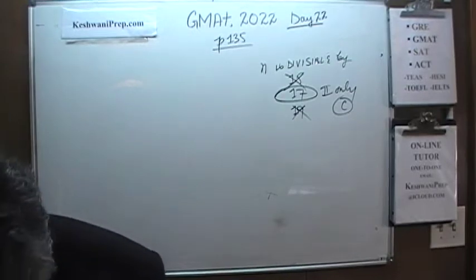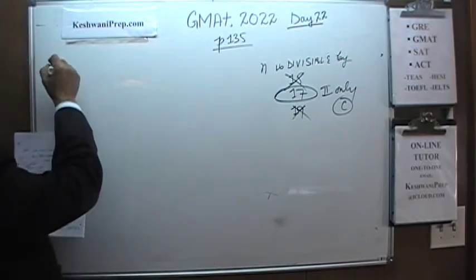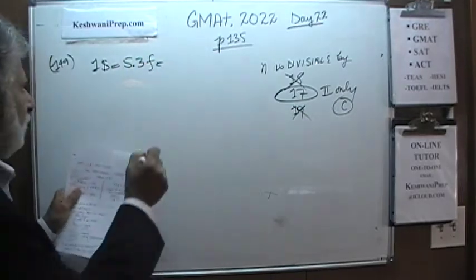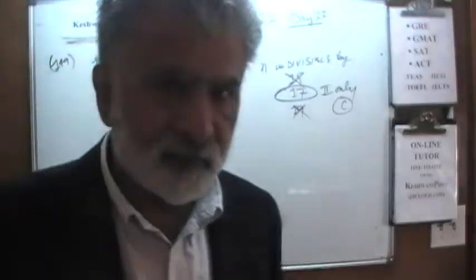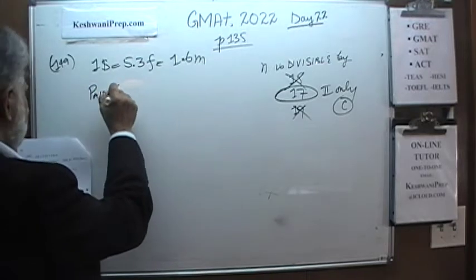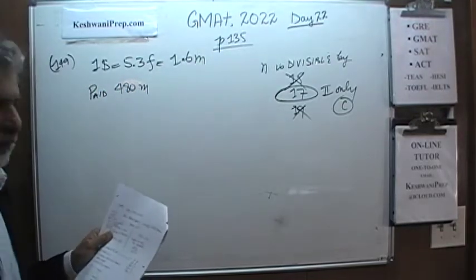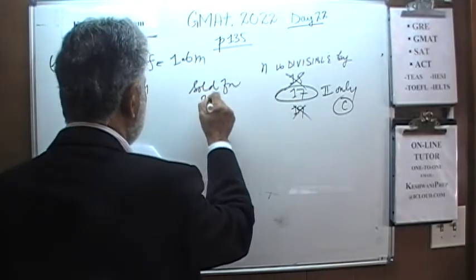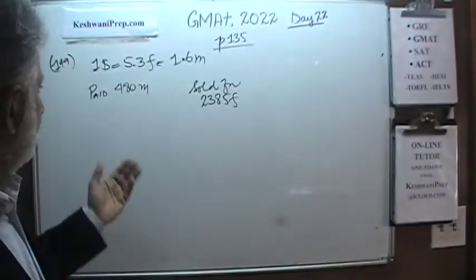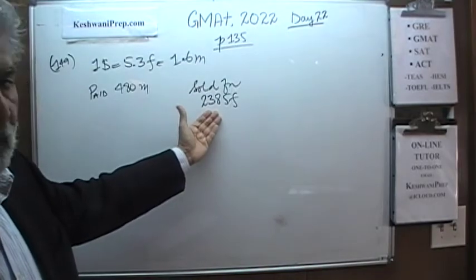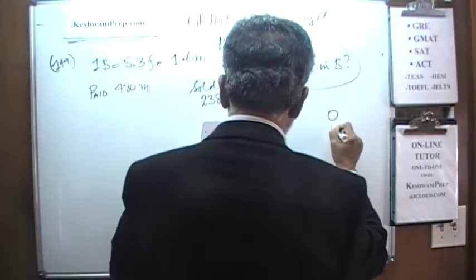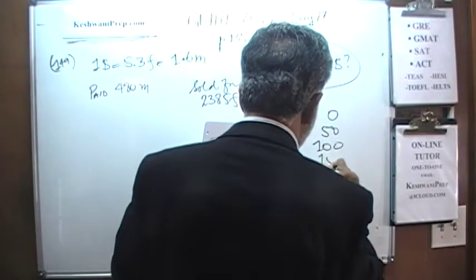Number 149. In number 149, we are told that 1 dollar equals 5.3 francs, which equals 1.6 marks. The fact that France and Germany no longer use francs and marks — now they have the Euro — doesn't concern us here. We are told that some guy paid 480 marks and sold whatever he bought for 2,385 francs. The question is, what is his profit? So he bought something in Germany for 480 marks and sold it in France for 2,385 francs. What is the profit in dollars? The answer choices are 0, 50, 100, 150, and 200.